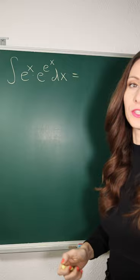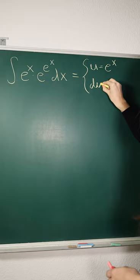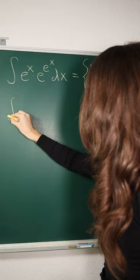Let's make u equal to e to the x, and then du is equal to e to the x dx. Now, let's replace our e to the x with u and e to the x dx with du.